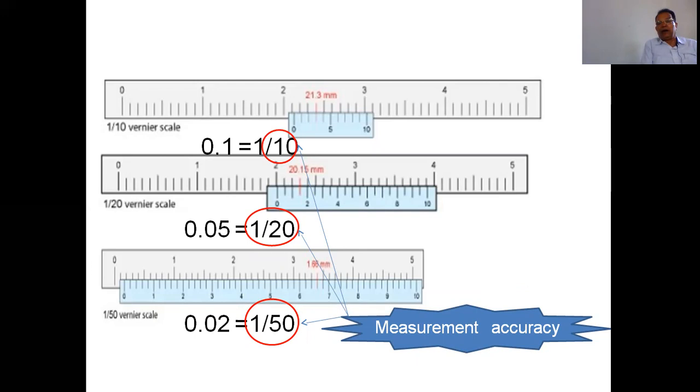How do we note the reading? There are two scales: on top is the main scale, and below in blue is the Vernier scale.